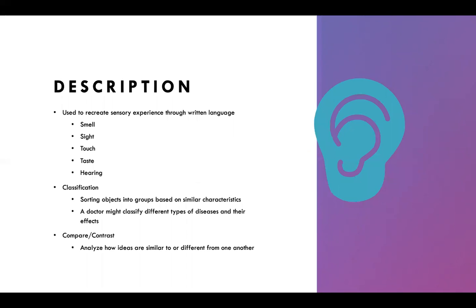We also have description — this is recreating sensory experiences through written language. Whenever we're describing what we smelled, saw, touched, tasted, or heard, that is descriptive writing. Classification also falls under descriptive writing; this is sorting objects into groups based on similar characteristics. For example, a doctor might classify different types of diseases and the effects they have on the body. Comparing and contrasting is another type of description — analyzing how things are similar to or different from one another.